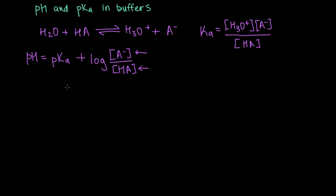So what we're going to do is we're going to rearrange this equation to solve for this ratio that we might be interested in. So we're going to subtract pKa from both sides, and that gives us the log of A minus over HA.